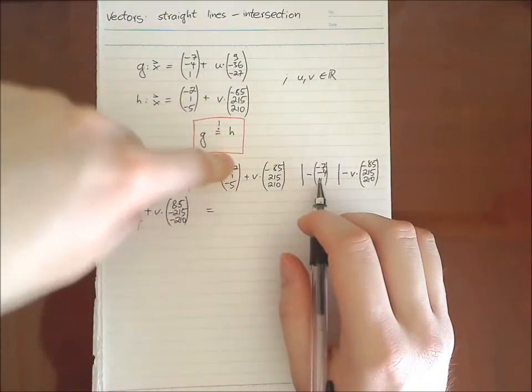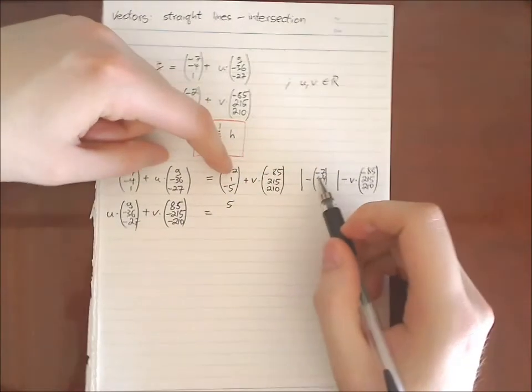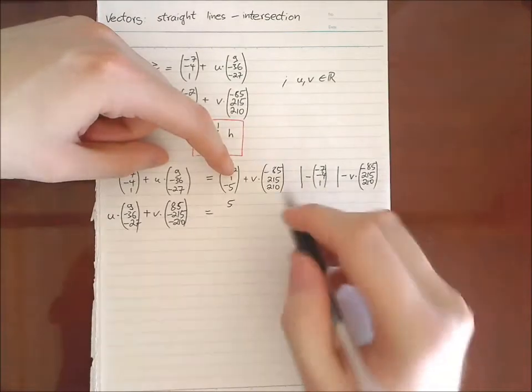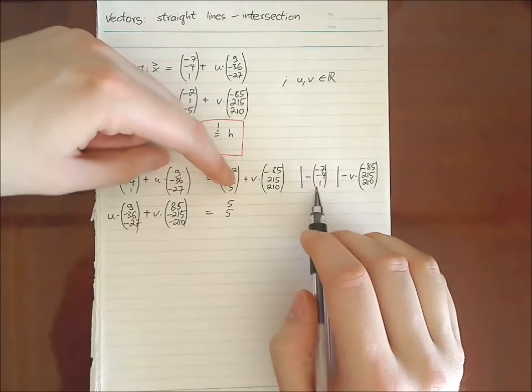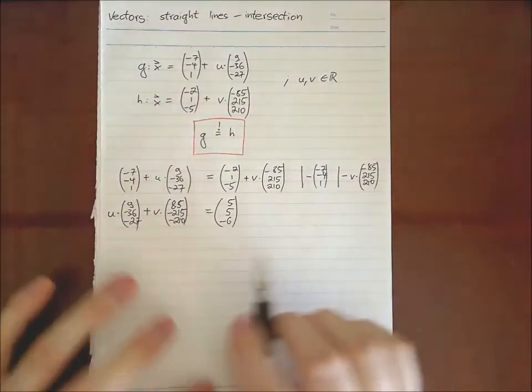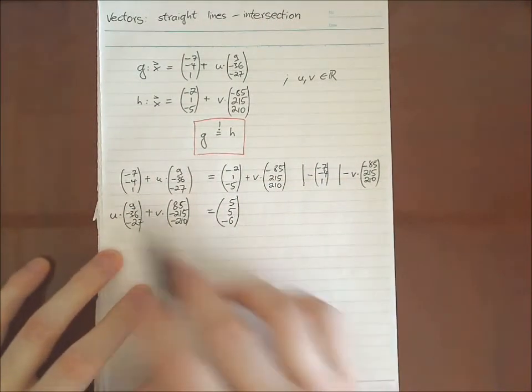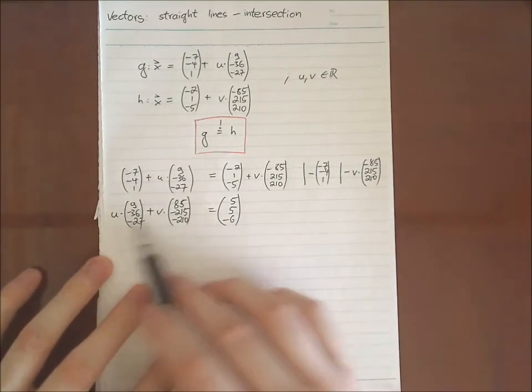So we end up with minus two plus seven, in this case, which is five. Then we have one plus four is also five, minus five minus one is minus six. So this looks a little bit nicer, but we still have to find out what u and v are.